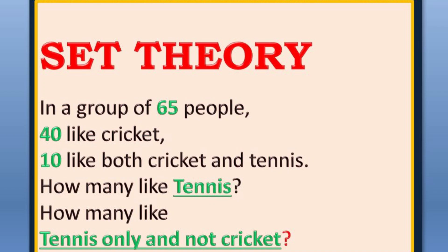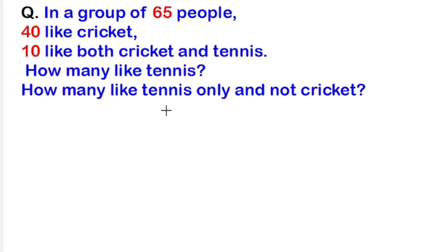In this question of set theory, there is a group of 65 people. Out of those 65 people, 40 like cricket and 10 like both cricket and tennis. We need to find the number of people who like tennis, and also the number of people who like tennis only and not cricket.